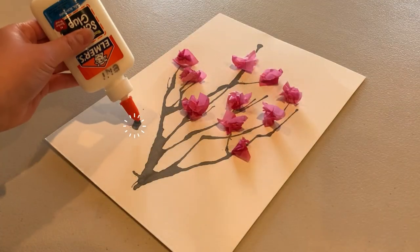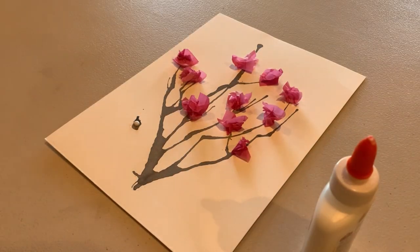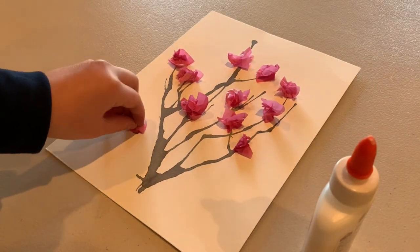If you accidentally smudged or dripped your ink, you can cover it up with a blossom. You can make it look like one is falling to the ground.